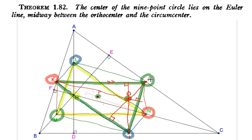So this is such a beautiful result. Not only did we show that the center of our nine-point circle is on the Euler line, but it's actually the midpoint between the orthocenter and the circumcenter of triangle ABC.